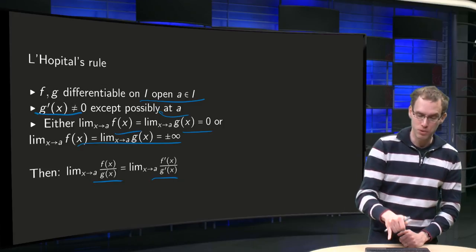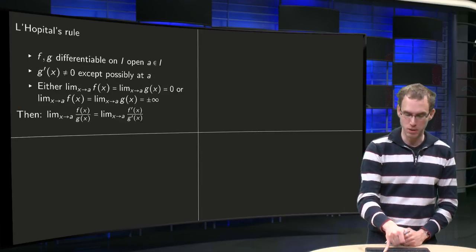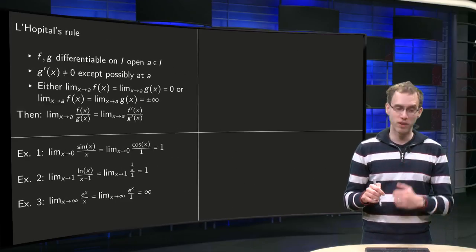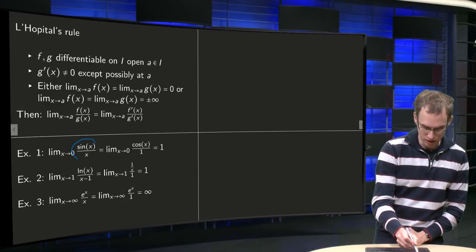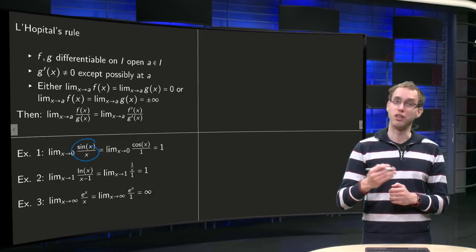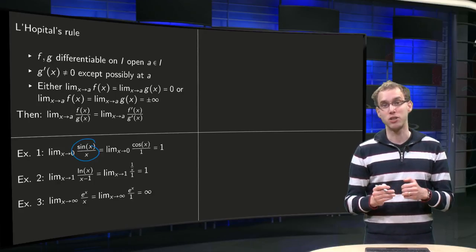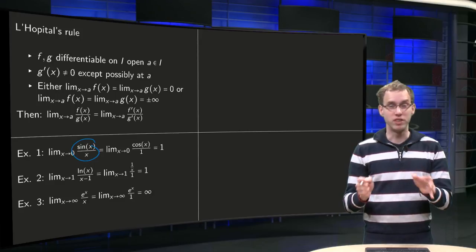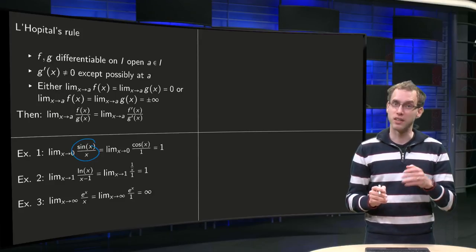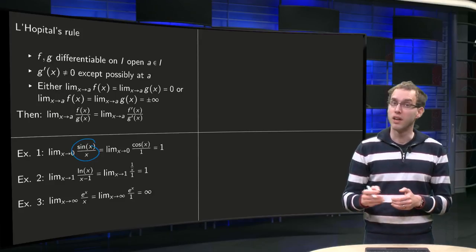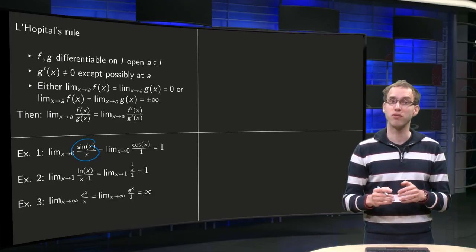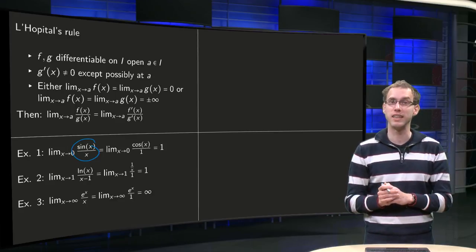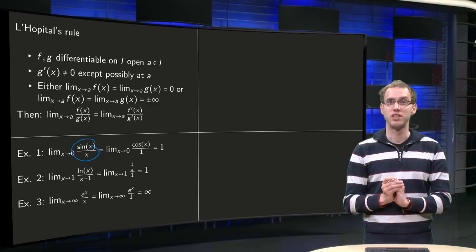Let us see how L'Hôpital's rule works in an example. Suppose we have limit of x to 0 of sin x over x. So our f(x) equals sin x, g(x) equals x, x goes to 0. f and g are differentiable, no problem with that. And sin of 0 equals 0, and if x equals 0, x equals 0 of course. So we have a 0 over 0 case here, so the conditions are satisfied.